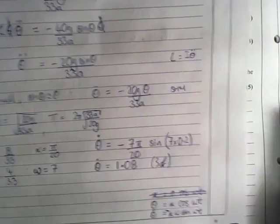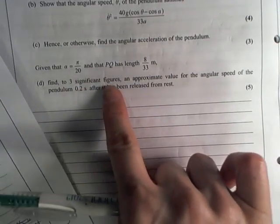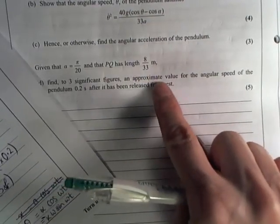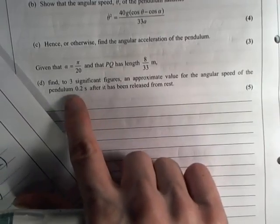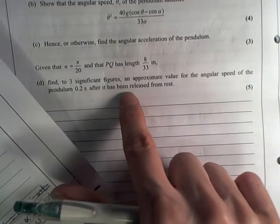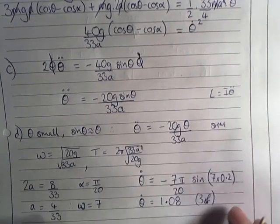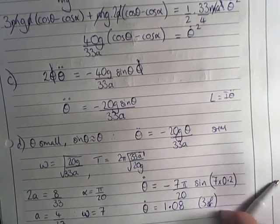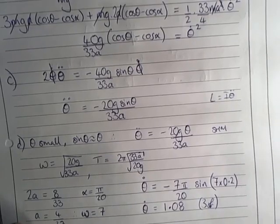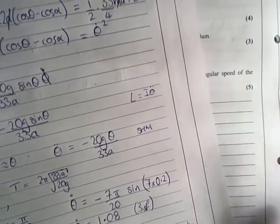Let's just double check what they wanted. Find to three significant figures, yes, an approximate value for the angular speed of the pendulum 0.2 seconds after it has been released from rest. Yes. Okay, so that part of the question was worth another five marks.